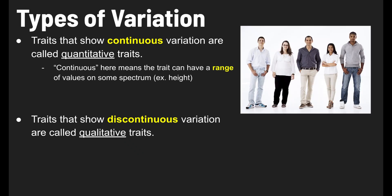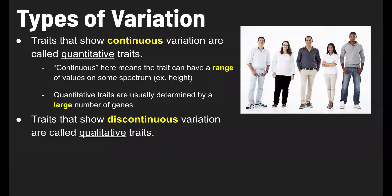Let's focus on continuous variation. By continuous, I mean that the trait can have a range of values on a spectrum. For example, height — there is a range of heights that you can be. These are referred to as quantitative traits because you can put some value on them that falls on that spectrum. Quantitative traits are usually determined by a large number of genes, so your height is not controlled by just one or two genes — it's controlled by many genes.